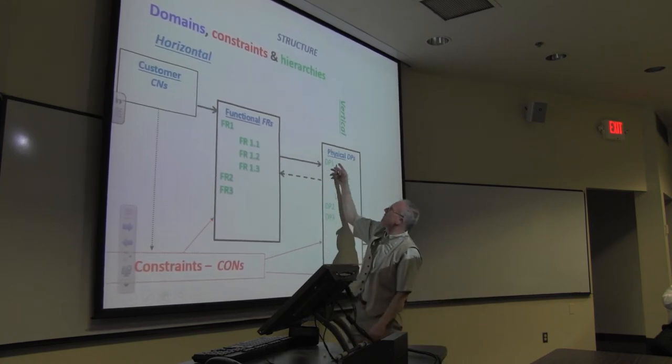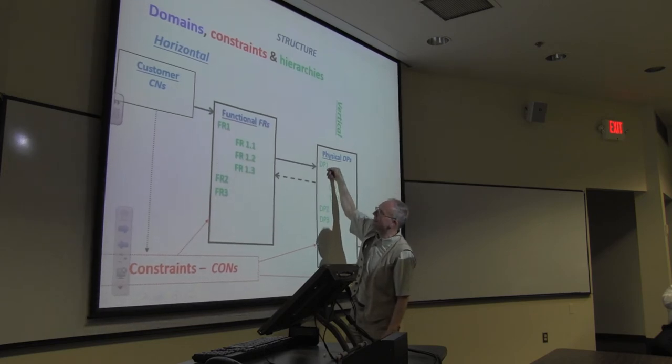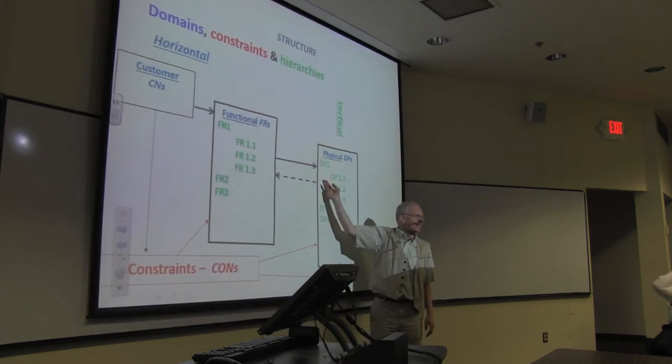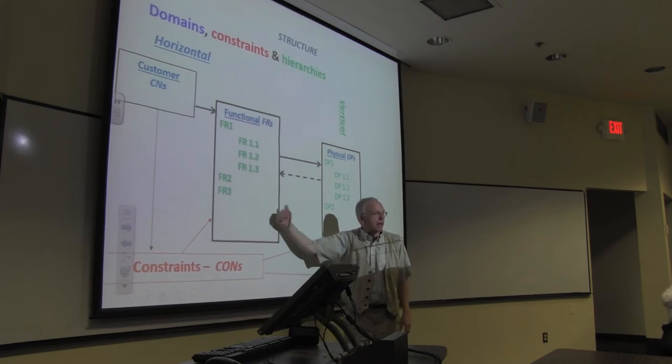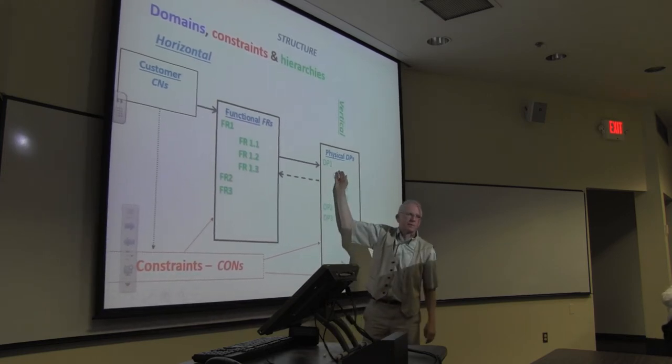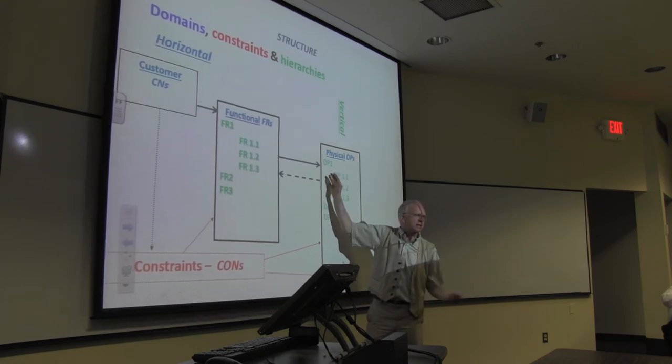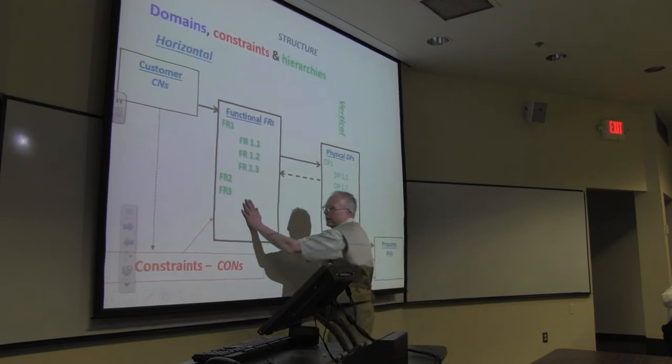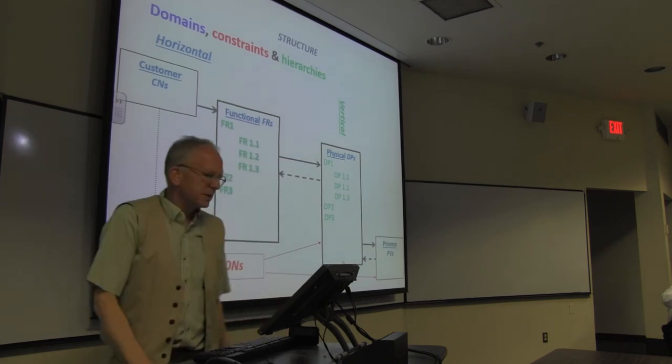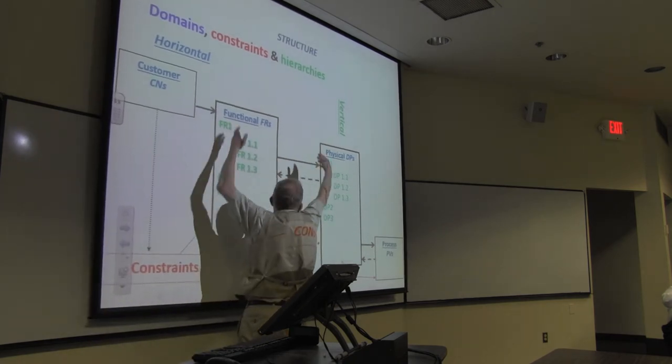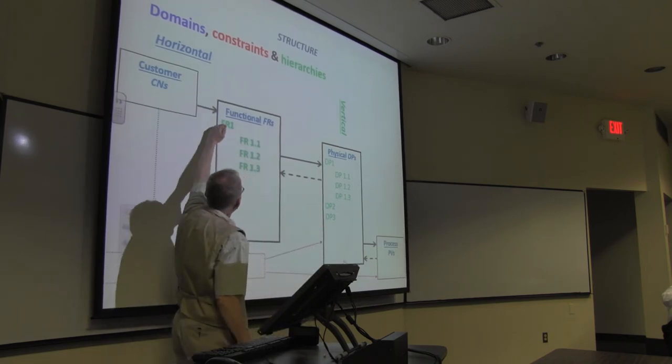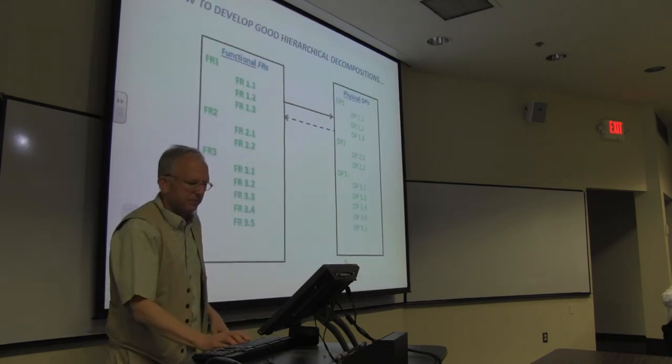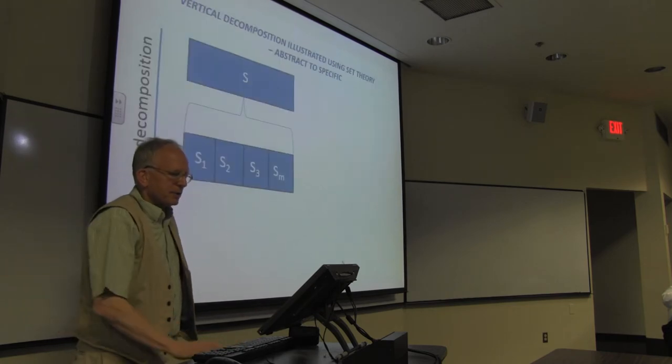The main thing we're working on is the FRs to the DPs. We can work the PVs in. When we start here, we do an upper level FR to an upper level DP, and then that defines where we're going here. If my upper level DP is a pneumatic system, the lower level FRs all apply to pneumatic systems. Whereas if it's a magnetic system, then they would apply to magnetic systems. The customer needs generate the FRs. So bimodal thinking, two different spaces. We've got the horizontal decomposition this way and then vertical decomposition this way. Vertical from general to specific, horizontal across the different domains.